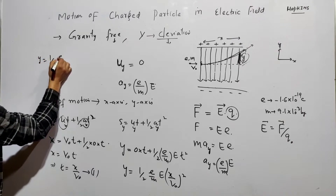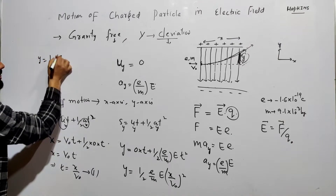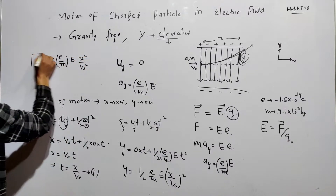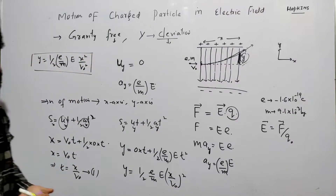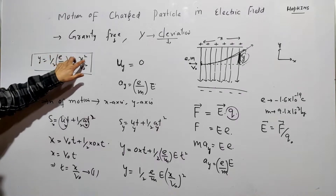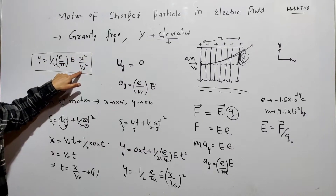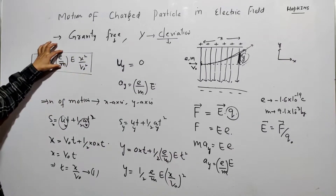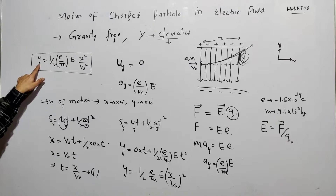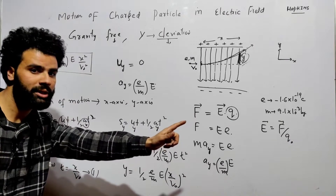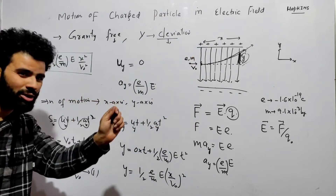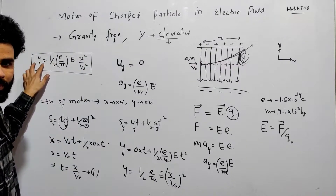So the deviation formula is: y = ½·(e/m)·E·x²/v₀². The deviation depends on the charge-to-mass ratio, the electric field strength, the length of the plate, and the initial velocity. Greater charge-to-mass ratio means greater deviation. Greater initial velocity along x means less deviation — if you throw the electron faster, it spends less time in the field and deviates less.